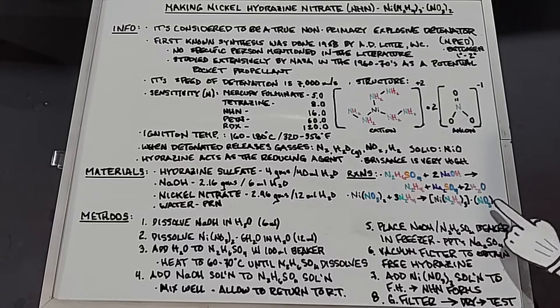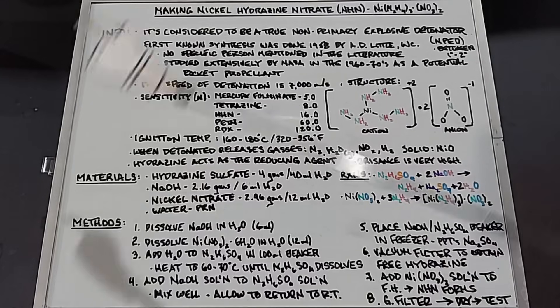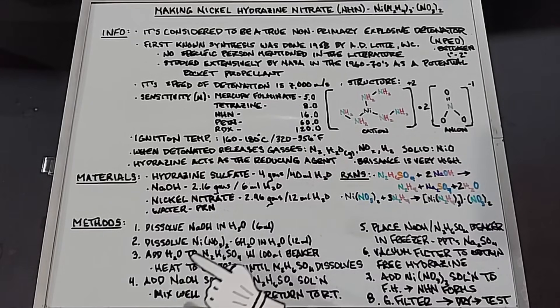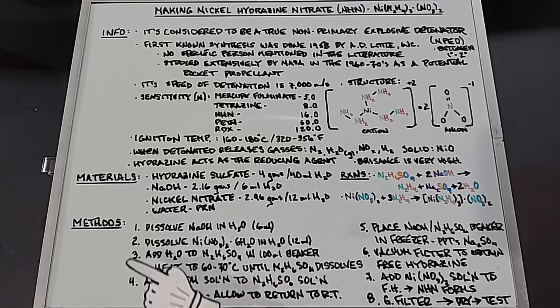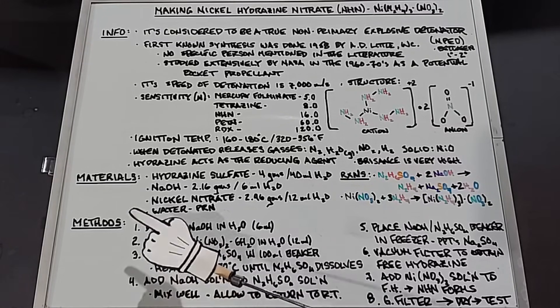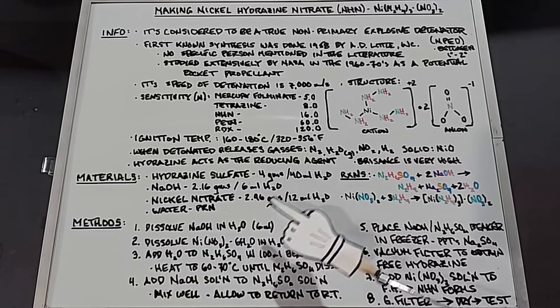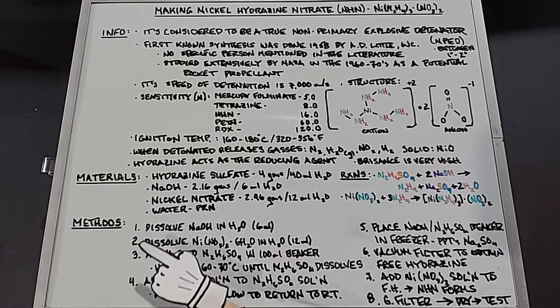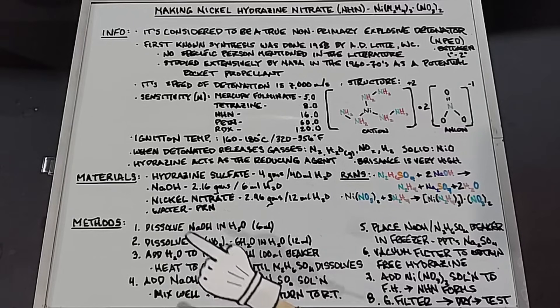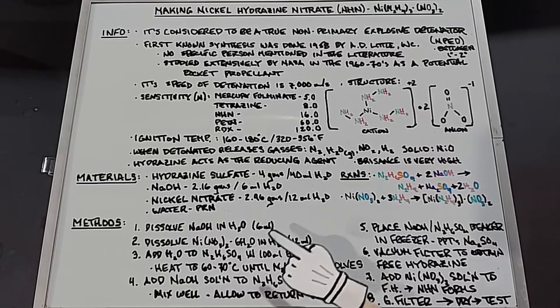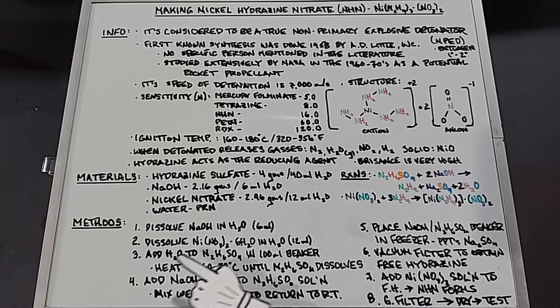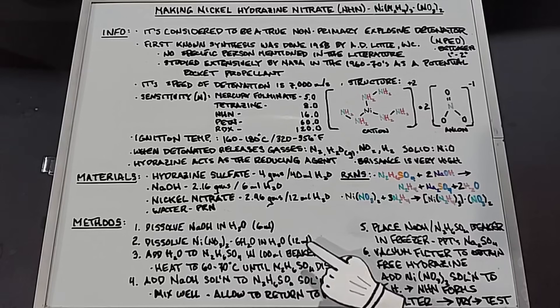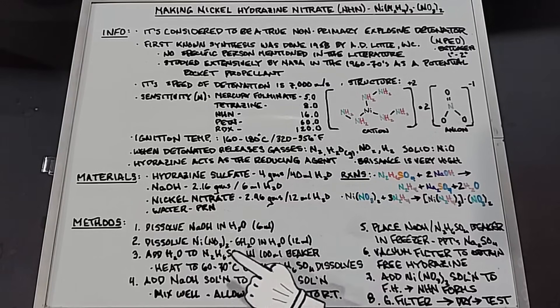On to our methods. Usually I like to draw things out for those that learn more visually, but I didn't have nearly enough room to do it, so we're going to go through this numerically. Number 1: dissolve sodium hydroxide in water, 6 milliliters. Number 2: dissolve the nickel nitrate, which is nickel nitrate hexahydrate, in water, 12 milliliters. Number 3: we're going to add our water to our hydrazine sulfate in a 100 milliliter beaker, which it will not dissolve in very well at all at room temperature,